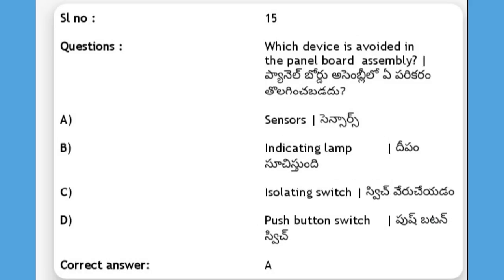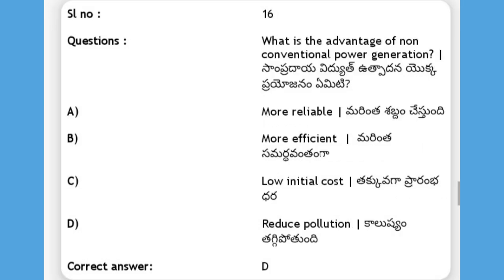Which device is awarded in the panel board assembly? Options: sensors, indicating lamp, isolating switch, push button switch. The answer is A, sensors. What is the advantage of non-conventional power generation? Options: more reliable, more efficient, low initial cost, reduce pollution. The answer is D, reduce pollution.